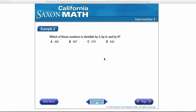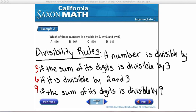Please copy down the following divisibility rules. A number is divisible by 3 if the sum of its digits is divisible by 3. A number is divisible by 6 if it is divisible by 2 and 3. And a number is divisible by 9 if the sum of its digits is divisible by 9.